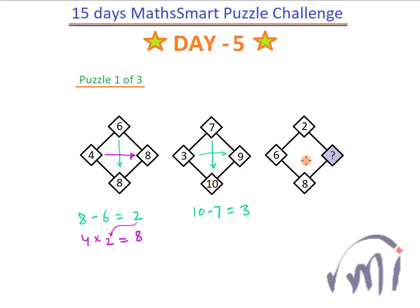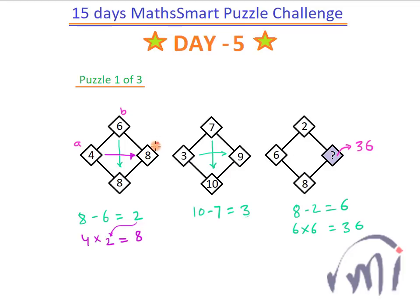So here the difference between 8 and 2 is 6, and when this 6 gets multiplied by this 6, it gives me 36. So the value of the question mark will be 36. If I name these boxes as A, B, C, and D, then A multiplied by (D minus B) is equal to C.